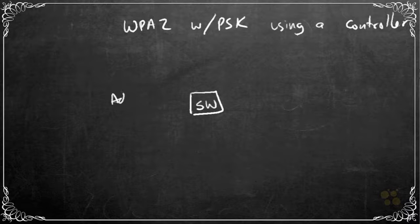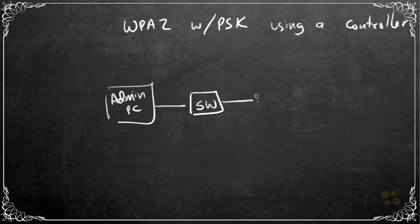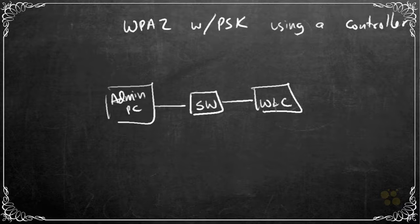Let's go ahead and take the admin PC. Admin PC is connected to the switch and then we are going to need a controller. So over here, I'll put a WLC which is an acronym for wireless LAN controller. This is an example of a controller that is physically in the same building as the access points.